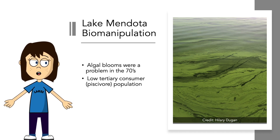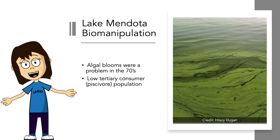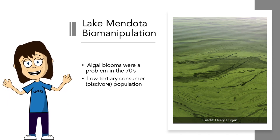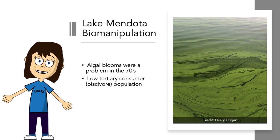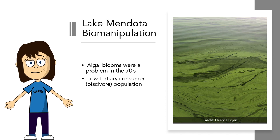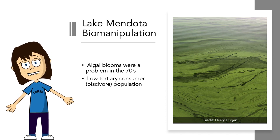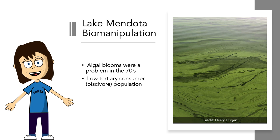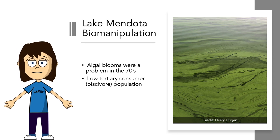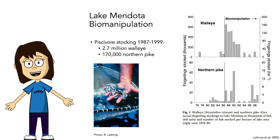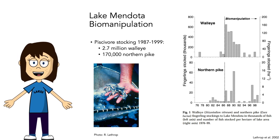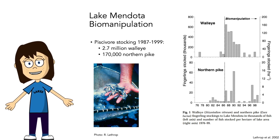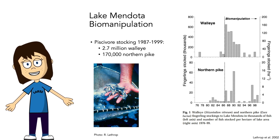In the 1970s, algae blooms were a big problem in the lake, and there were very low tertiary consumer — piscivore — populations. The hypothesis was that because there weren't very many piscivores, there were a lot of planktivores, and those secondary consumers were not allowing zooplankton populations to get very big. Because the zooplankton populations were kept small, there was a lot of phytoplankton. So some ecologists decided to try stocking Lake Mendota with piscivores — specifically walleye and northern pike — hoping that increasing piscivore numbers would drive down planktivores, increase zooplankton, decrease phytoplankton, and improve water quality.